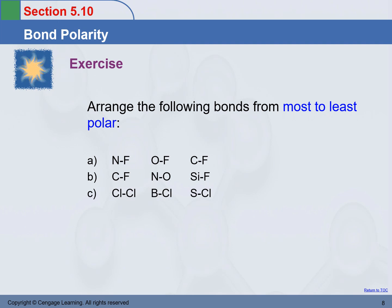The difference in electronegativity between bonded atoms decides how much the shared electrons will stay towards the more electronegative atom. The greater the difference, the more electrons stay closer to the more electronegative atom. Let's arrange some bonds from most to least polar. Let me put the sequence of these elements in the periodic table — carbon, nitrogen, oxygen, fluorine, silicon, chlorine, sulfur, boron — so we can refer to them. We will work on the first one together; you work on the other two by yourself.